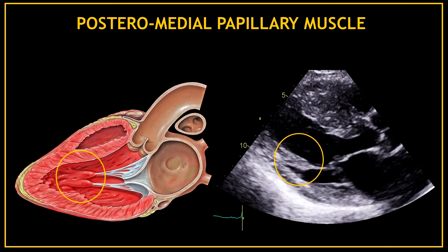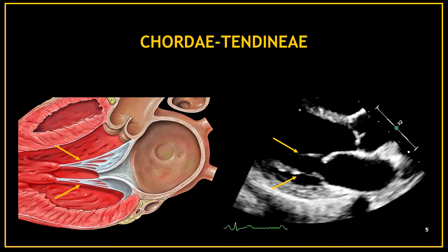Those chunky lines attached to the mitral valve are the papillary muscles. In this view specifically we can see the posteromedial papillary muscle. These thinner lines attached to the mitral valve leaflets are the chordae tendineae.